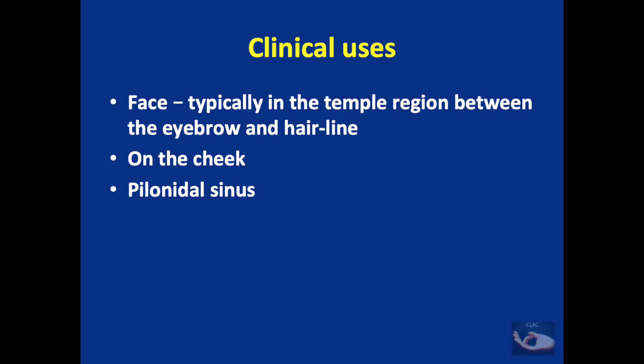The clinical uses for the Limburg flap are typically on the face, especially the temple region between the eyebrow and the hairline, on the cheek region, and for excision of pilonidal sinus and resurfacing. The double rhomboid flap is ideal for elongated defects, and the triple rhomboid flap is ideal for resurfacing of circular defects, especially on the scalp.